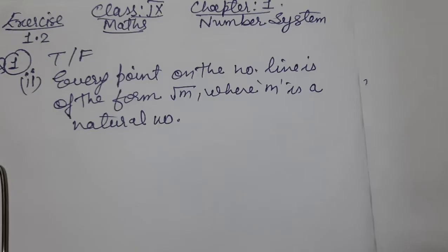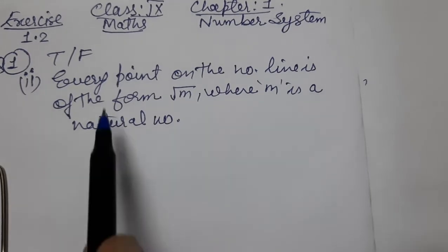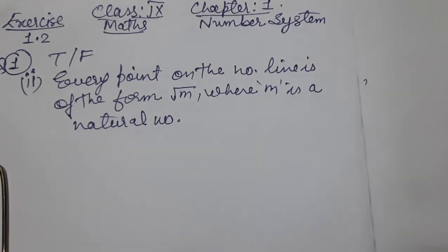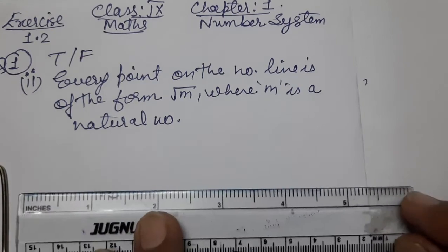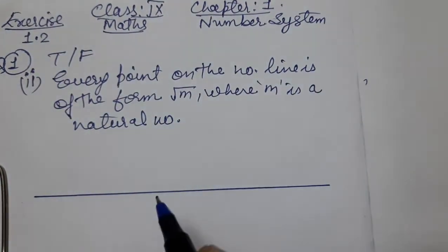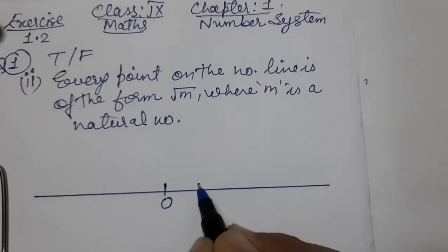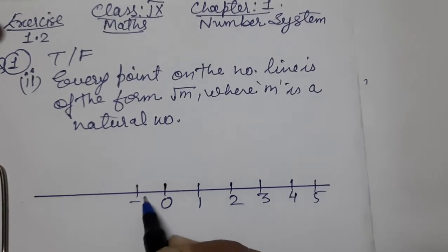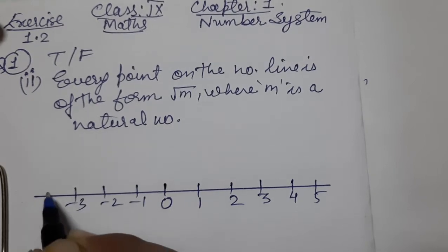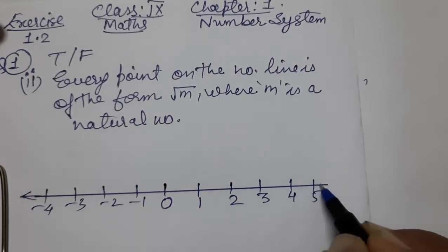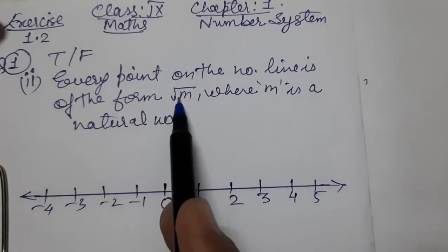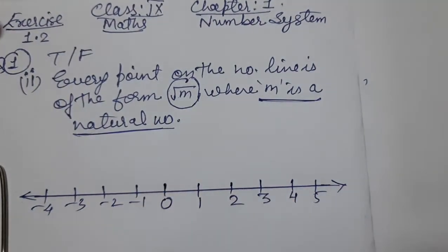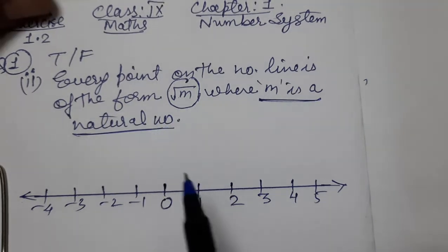Now see the second question: every point on the number line is of the form √m, where m is a natural number. So let's draw a number line and see. We mark some points: 0, 1, 2, 3, 4, 5 as positive numbers and -1, -2, -3, -4 as negative numbers.